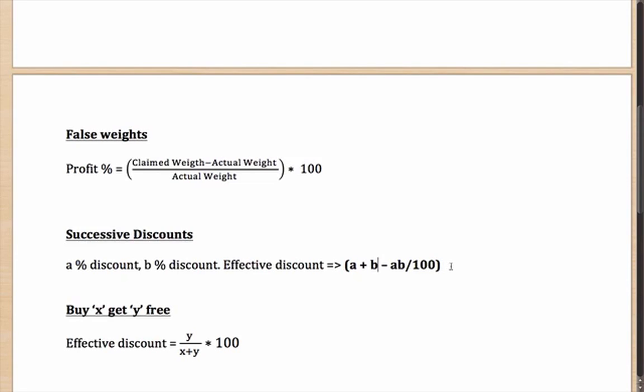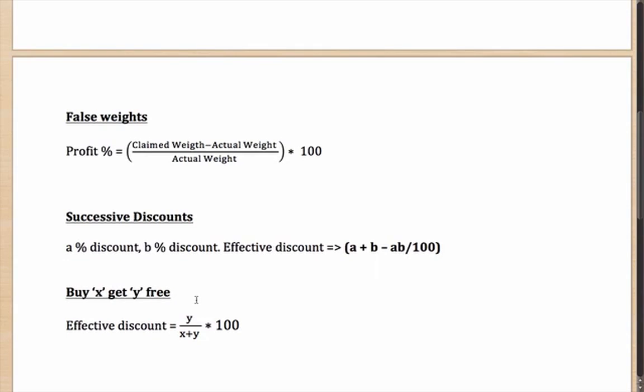Another case which is very popular these days: buy three goods, get five free, or something like that. What is happening in this case? You are getting a discount, but how much is the discount that you are getting? Well, that is given by y/(x+y) × 100. Why this formula? Well, think of it as the goods that you are taking home.